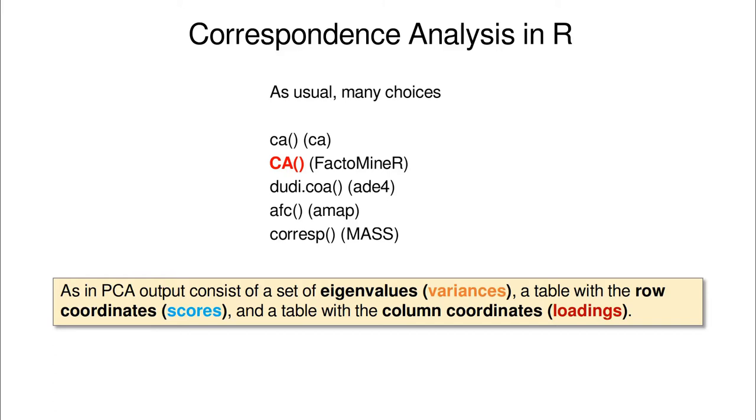As in PCA, the output of correspondence analysis is again a table of eigenvalues, which are going to maximize the variance in a table, and then we distinguish between rows, which are related to scores, and columns, which are related to loadings. But in this case, we don't have variables and individuals, because the definition of what is a column and what is a row is completely arbitrary.